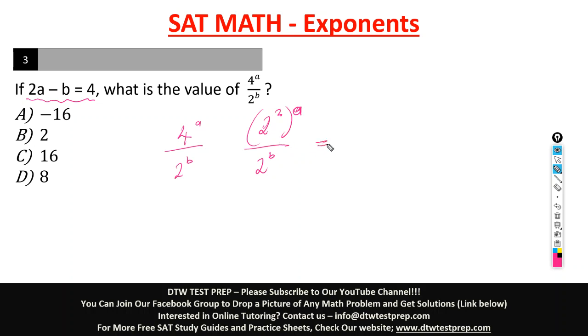Then this will be equal to, you multiply a times these two here gives us what? 2 raised to the power of 2a over 2b. And remember, when bases that are the same are divided, if the operation between bases that are the same is division, you subtract their powers. Do you remember that law?